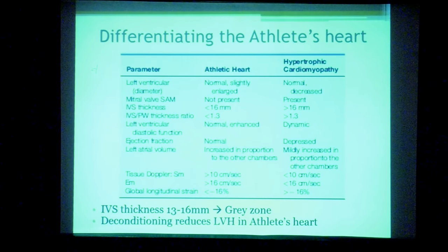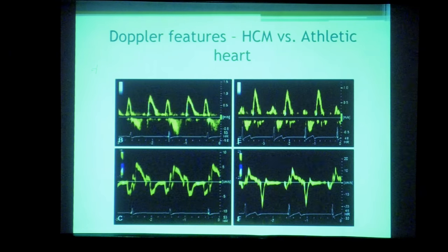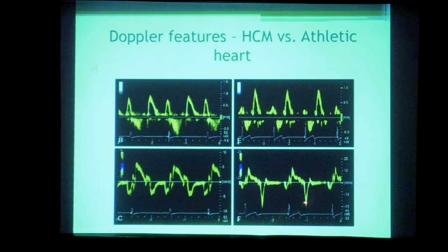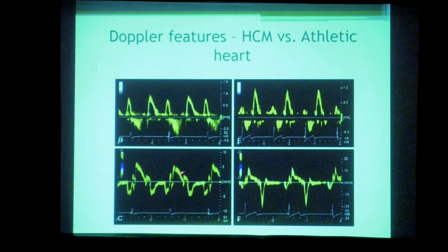The gray zone between athlete's heart and HCM is 13–16 mm septal thickness. Tissue Doppler is very useful in distinguishing the two: athlete's heart shows normal E' velocity and normal systolic velocity, whereas HCM shows decreased E' velocity and decreased systolic velocity.